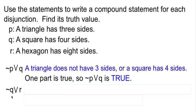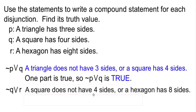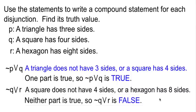Consider this one, not Q or R. Not Q would say 'a square does not have four sides.' R would say 'a hexagon has eight sides,' so we're looking at 'a square does not have four sides or a hexagon has eight sides.' Not Q is false, squares do have four sides. R is also false, a hexagon doesn't have eight sides, it has six. Since both parts are false, the overall disjunction is also false. Not Q or R is a false statement because both parts were false.